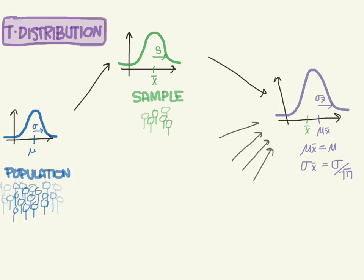We're discussing confidence intervals, and we're going to now talk about the t-distribution. Let's catch up real quick. We were talking about population — we have a group of people, and here's the population distribution. Maybe we're looking at heart rate, so of all the people in the world, we might have a mean heart rate and a standard deviation from the population. These are population parameters, and they cannot really be measured because it's too cumbersome — there are too many people — so these are unknowns.